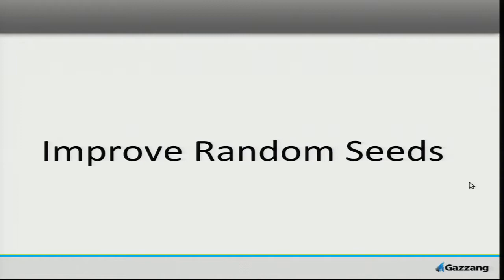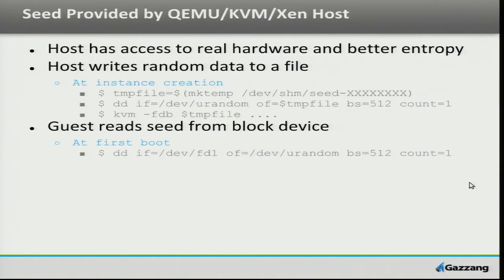So the first suggestion: we need to improve the random seeds that we start our instances up with. I think it's a safe assumption that the physical host has access to real hardware — real disks, USB devices, and other inputs. They could actually have PCI cards or entropy keys. For 50 bucks you can buy a USB hardware entropy key. I would suggest that part of the OpenStack compute instance launch process is for the host to write some random data to a file and pass that into the hypervisor as a secondary disk image — a floppy disk in KVM.